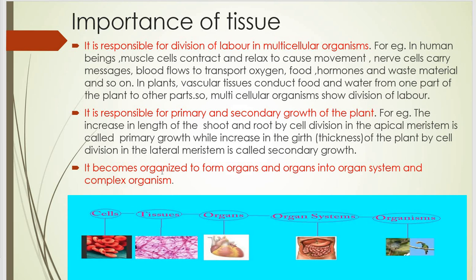Tissue becomes organized to form organs, and organs into organ systems, and complex organisms. That means tissue is organized to form organs, organs are organized to form organ systems, and organ systems are organized to form a complex organism.